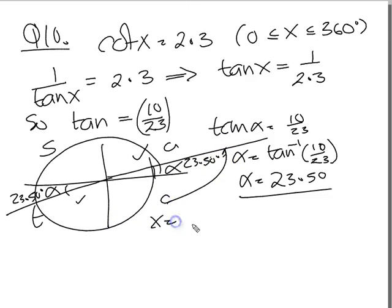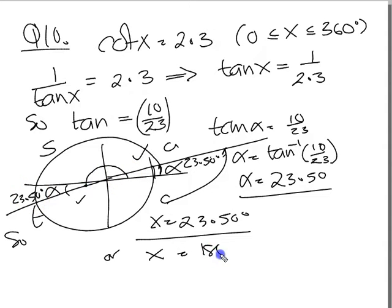So x equals, just go around to 23, 23.50 degrees. Or x equals, and then the second one, round 190, round 180, and round a little bit more. 180 plus 23.50, which is 203.50 degrees.